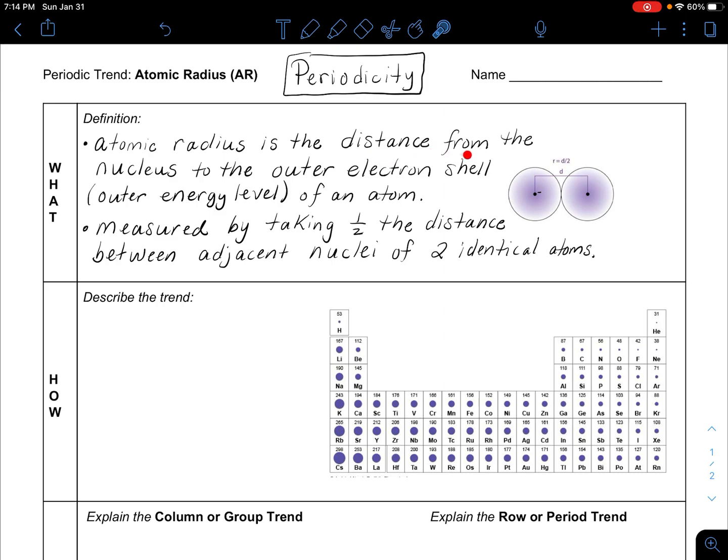The definition is the distance from the nucleus to the outer electron shell, also called the outer energy level of an atom. If you look at this picture, here's your nucleus and here is the outer electron shell. Now you might be saying why don't they just measure that? They don't.